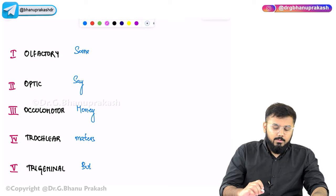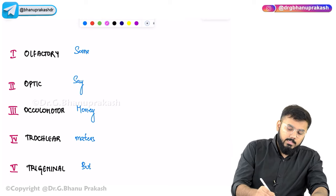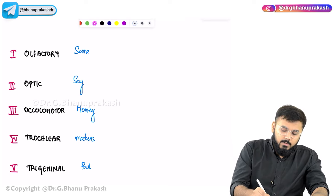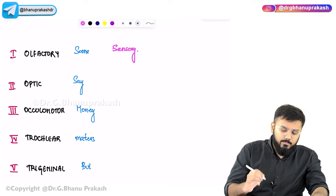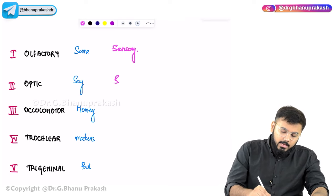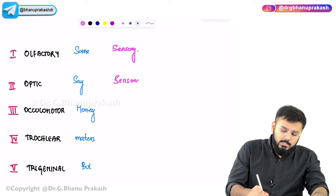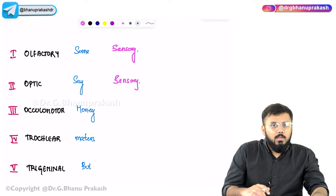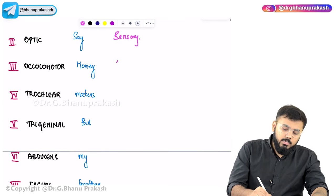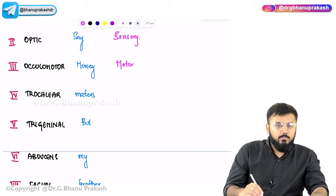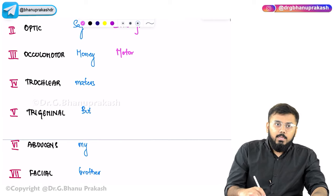Using the mnemonic: S = sensory, so the olfactory nerve (CN I) is sensory. The optic nerve (CN II) is also sensory. For oculomotor (CN III), M = motor. Trochlear (CN IV) is also motor.